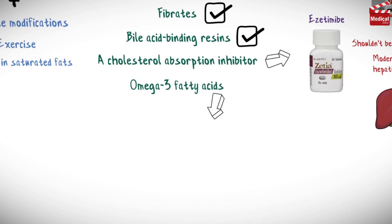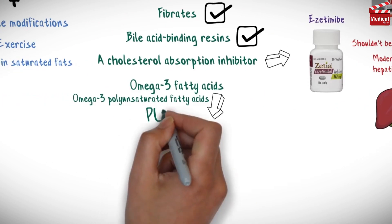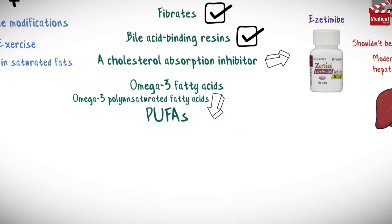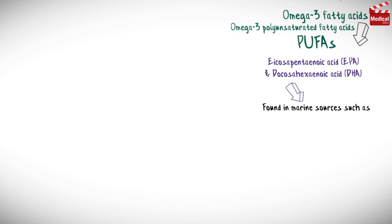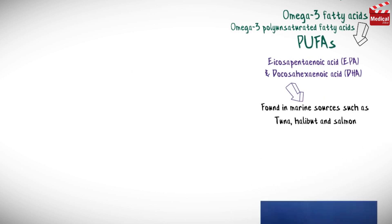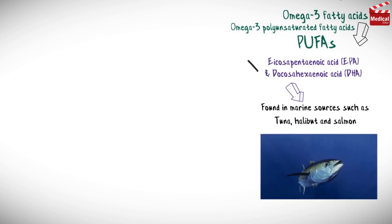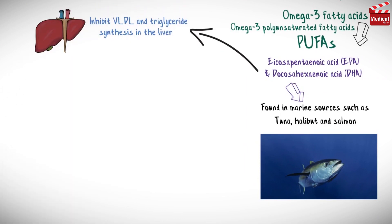The second topic is omega-3 polyunsaturated fatty acids. Eicosapentaenoic acid and docosahexaenoic acid are found in marine sources such as tuna, halibut, and salmon. They inhibit VLDL and triglyceride synthesis in the liver and increase HDL cholesterol.